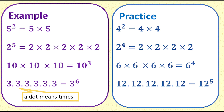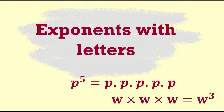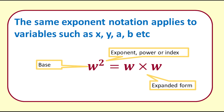So far we have just used powers of numbers, but we also need to apply this to variables or letters in algebra. The same exponent notation applies to variables or letters. You can see that w to the power of 2 is w times w — just like 5 to the power of 2 is 5 times 5.